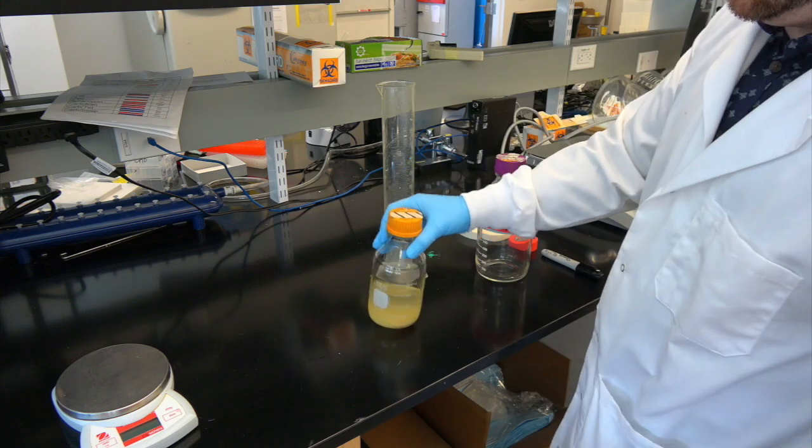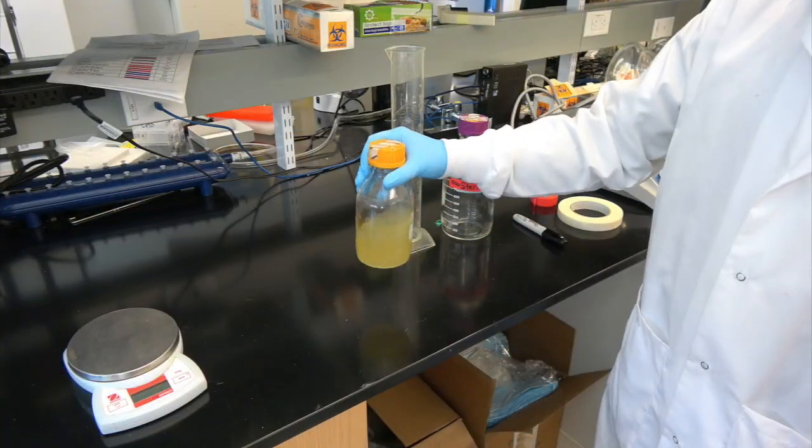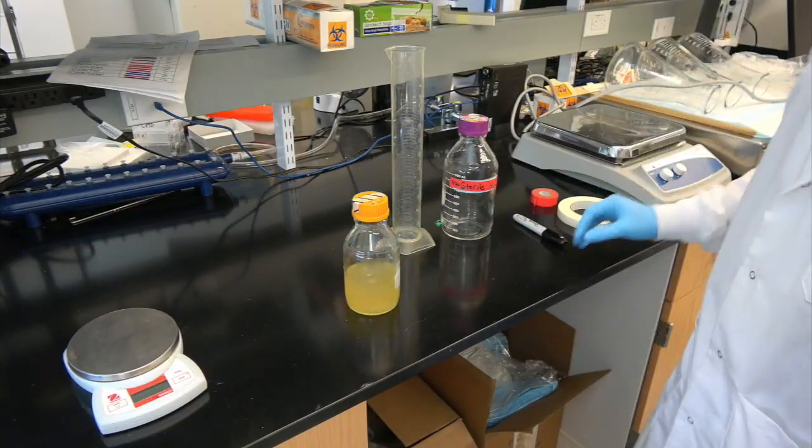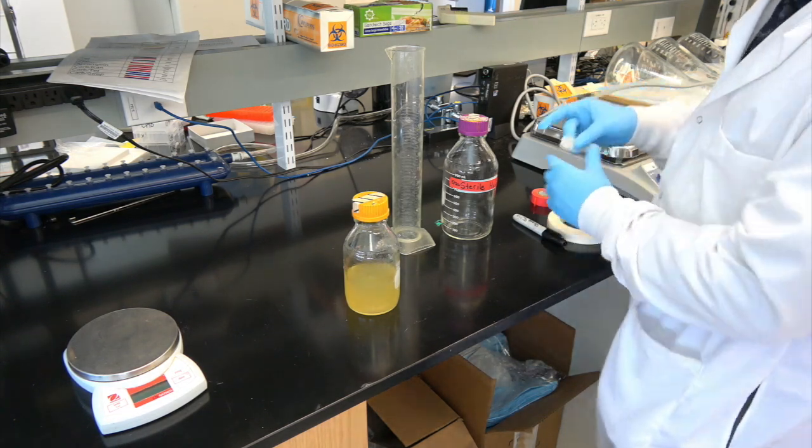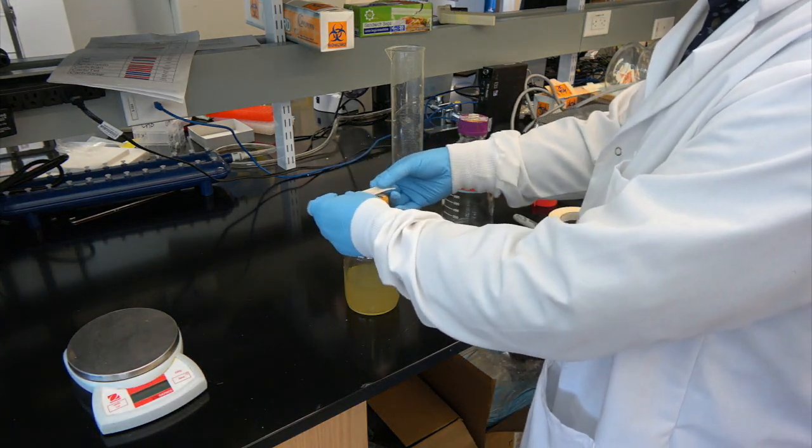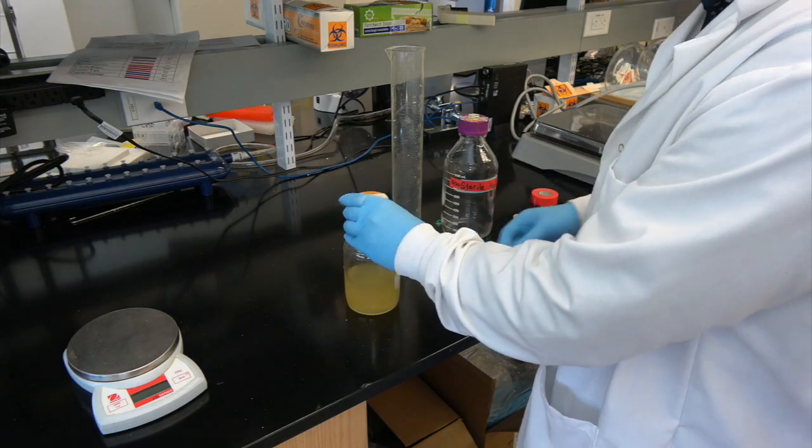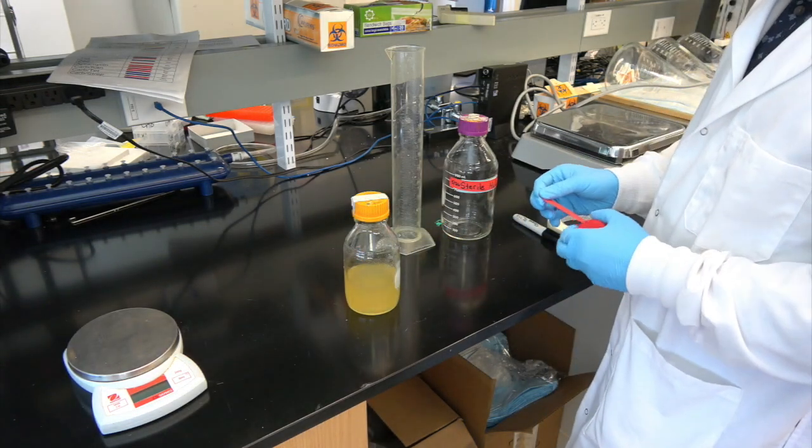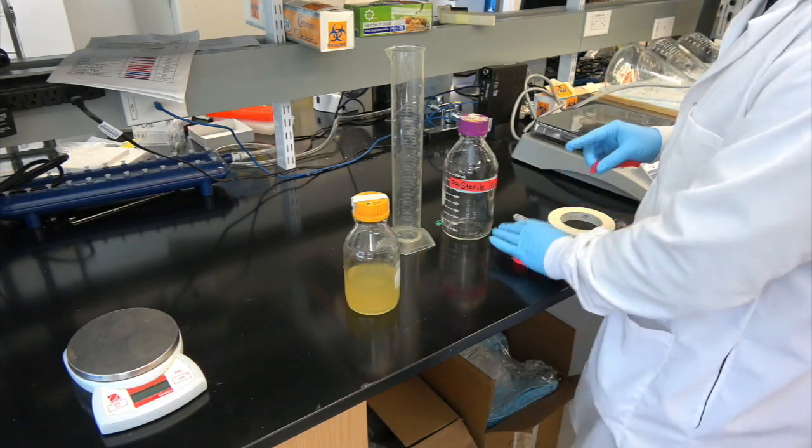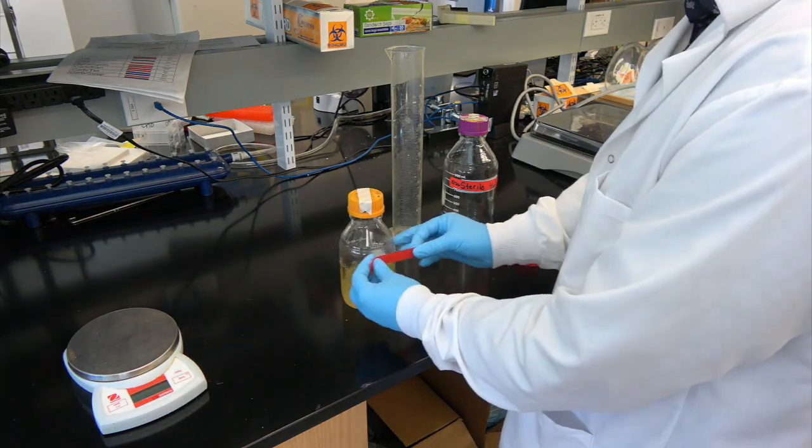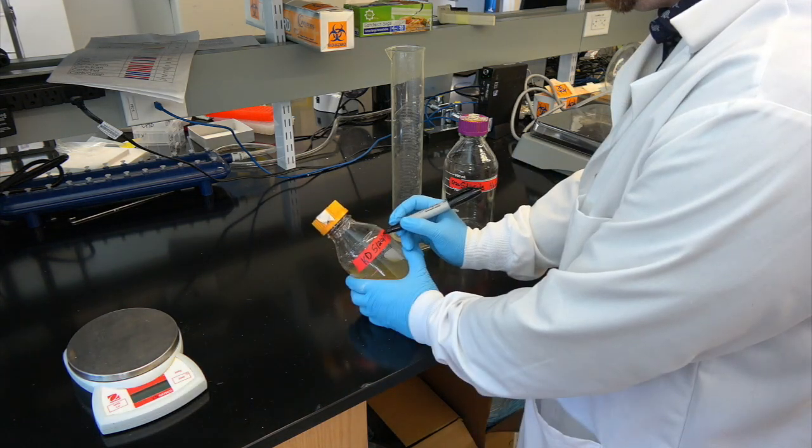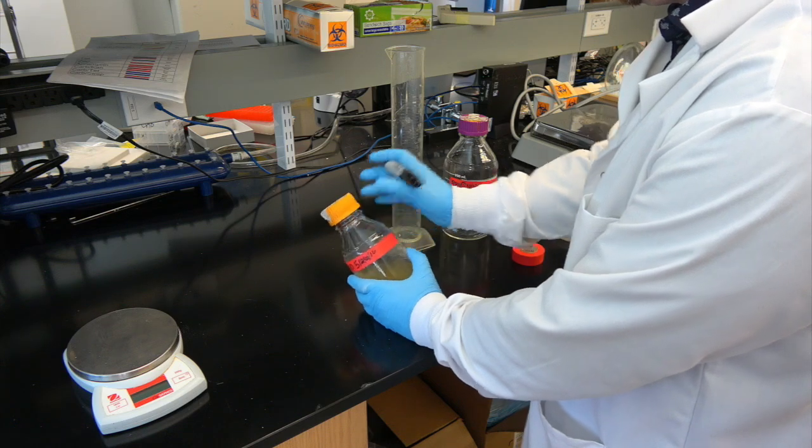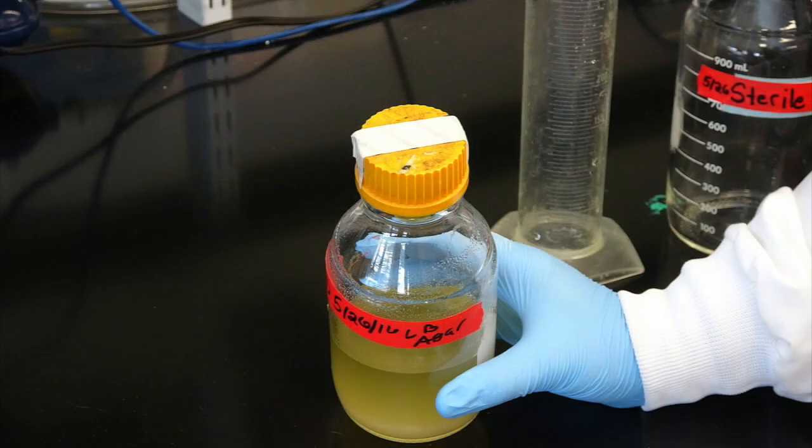Do not make the seal airtight. An airtight seal can lead to cracking during the sterilization process. Next, we add a piece of autoclave tape to the bottle. Autoclave tape darkens when it has been at least 10 minutes at 121 degrees Celsius in the autoclave and lets us know our LB agar has reached the appropriate sterilization temperature. We also add a piece of lab tape to the bottle with our initials, the date, and the bottle contents. This will clear up any confusion should we accidentally leave our bottle in the autoclave, or if somebody opens the autoclave before we do.